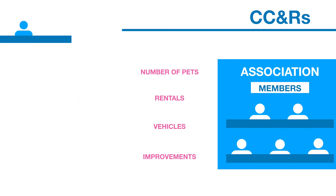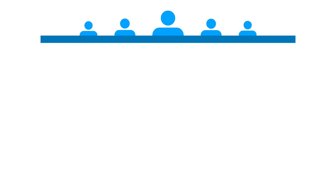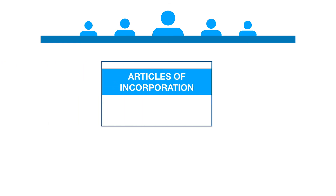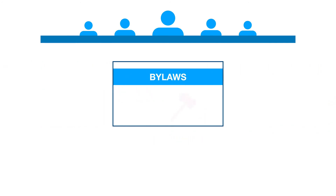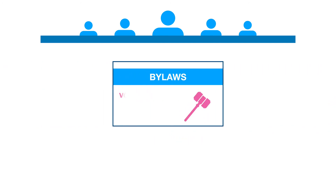To establish the policies and procedures for governing the association, Articles of Incorporation are filed with the Secretary of State, forming a corporation. This is followed by a set of bylaws that give voting rights to members, describe the election of a board of directors and the appointment of officers, and how meetings are held.